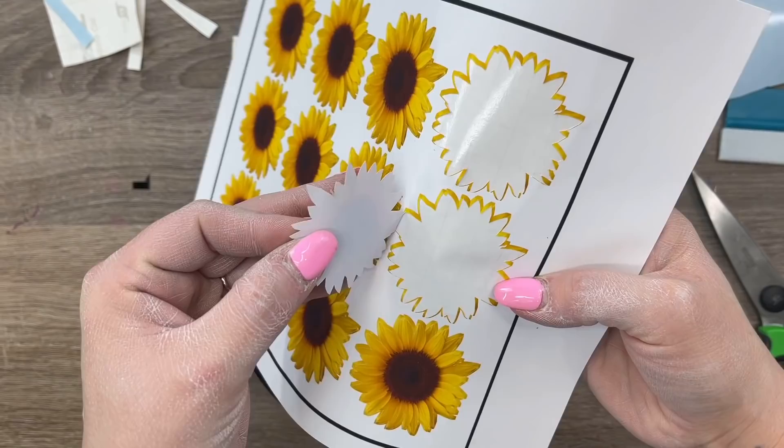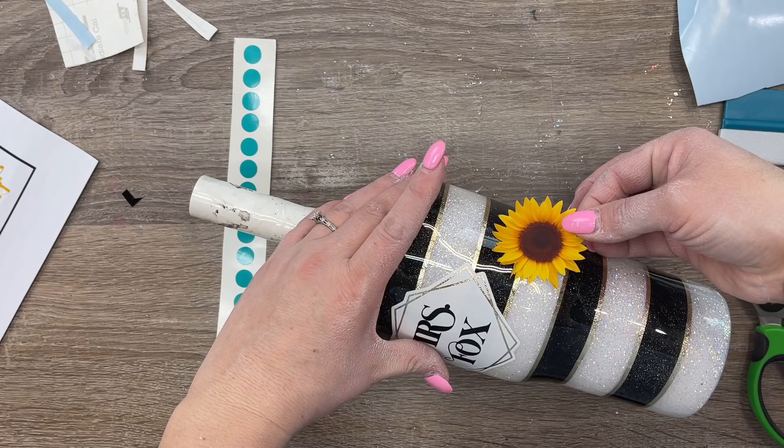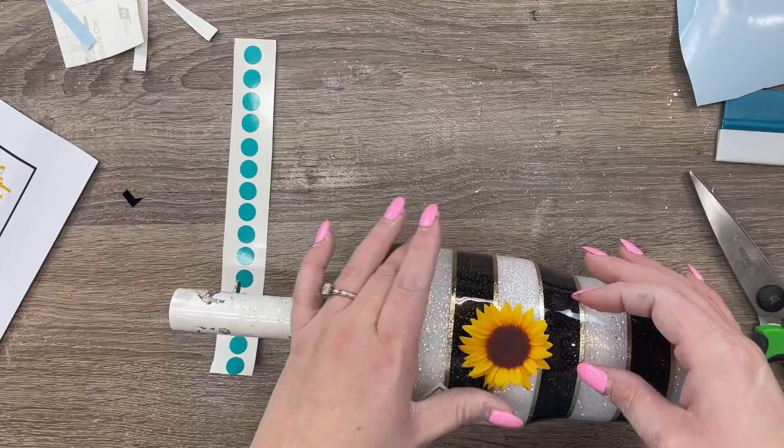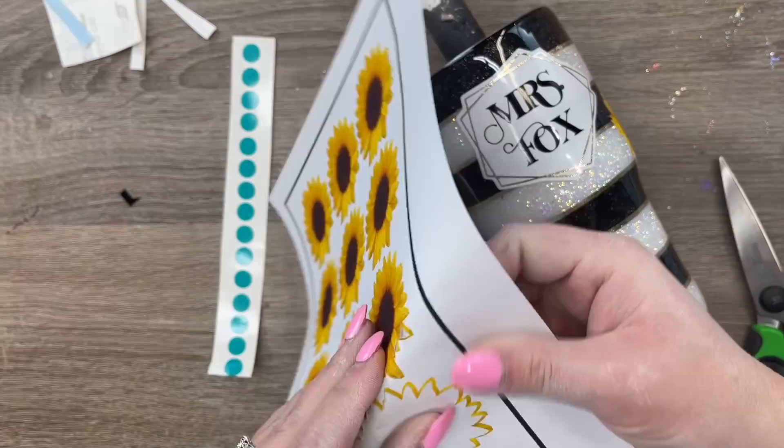I would try to avoid any creases on your cup with your placement of these because it's really hard to smooth it out and avoid wrinkles without kind of scratching up some of the ink on your vinyl. That's at least been my experience. So I just avoid any kind of curves in the cup.